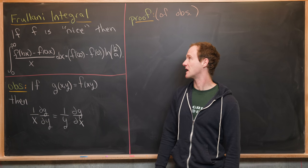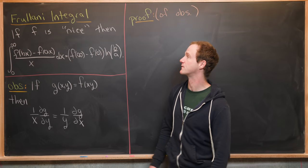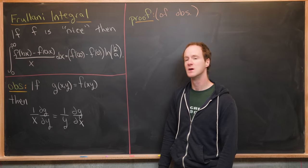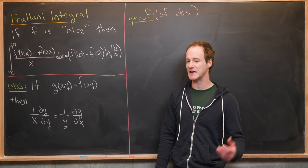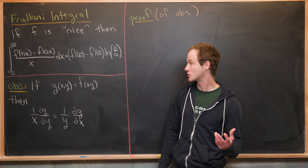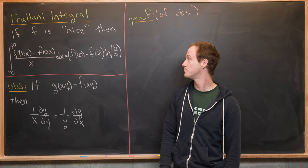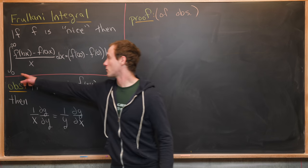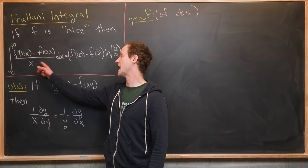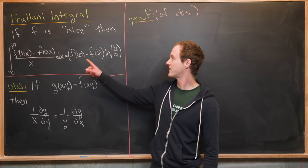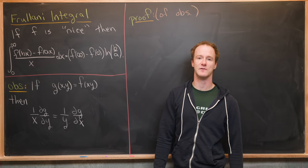Here we're going to look at a nice integral identity that allows us to evaluate a whole class of integrals known as Frullani integrals. In the setup, f is nice — by nice I mean it is integrable on the interval zero to infinity. Then the integral from zero to infinity of f(bx) minus f(ax) over x is equal to f(∞) minus f(0) times the natural log of b over a.